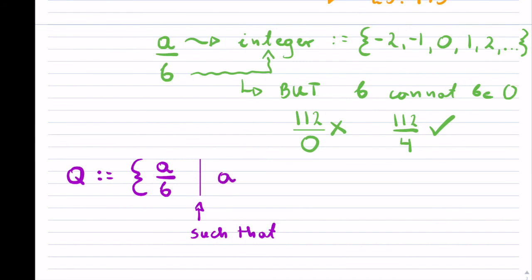As we wrote there, A, the way we write is an integer, is this way. Notice you can use Z or I. And B is also an integer, but we said B cannot be equal to zero.